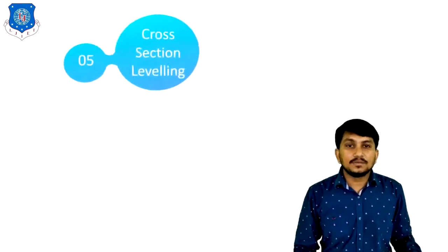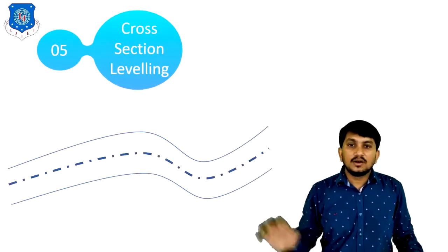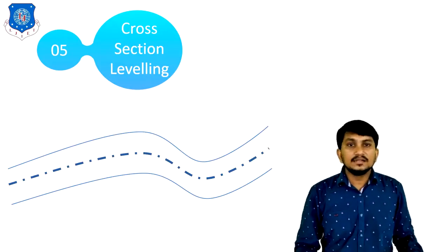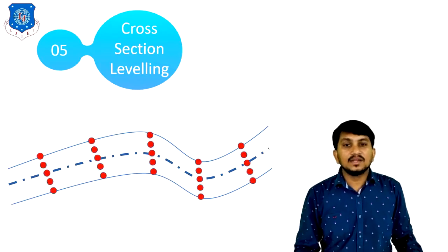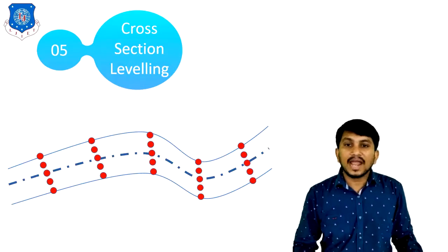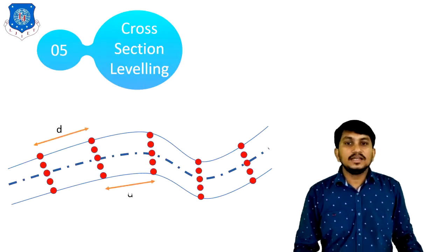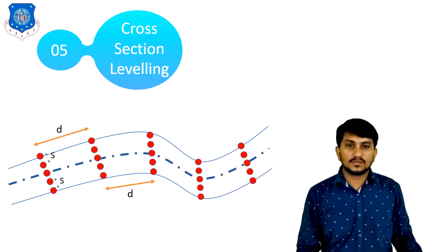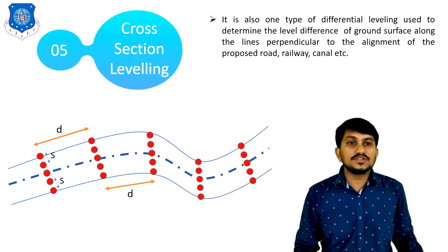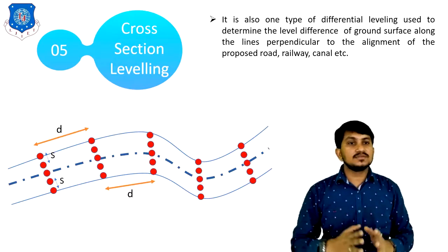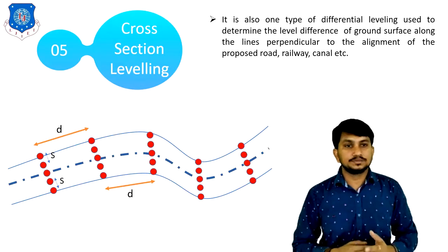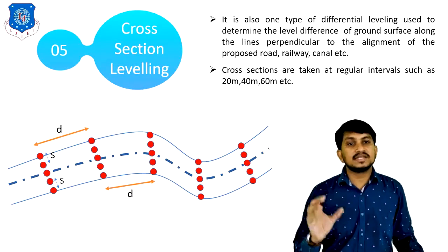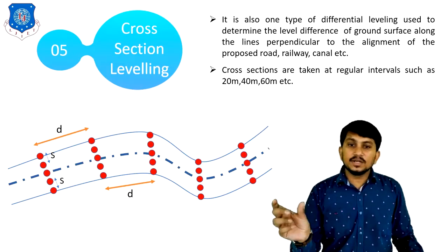Now let us discuss the fifth type of leveling, which is cross-section leveling. Here there is also a road, but the difference from longitudinal leveling is the direction of the points. In cross-section leveling, the points are marked exactly perpendicular to the alignment of the road, and the levels of each point are found out. The distance between the points is similar and the spacing is also equal throughout.